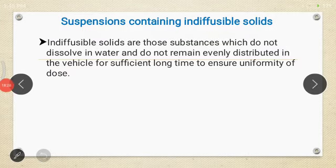The next type is suspension containing indiffusible solids. Indiffusible solids are those substances which do not dissolve in water and do not remain evenly distributed in the vehicle for a sufficiently long time to ensure uniformity of dose. Examples include calamine, zinc oxide, aspirin, and chalk.